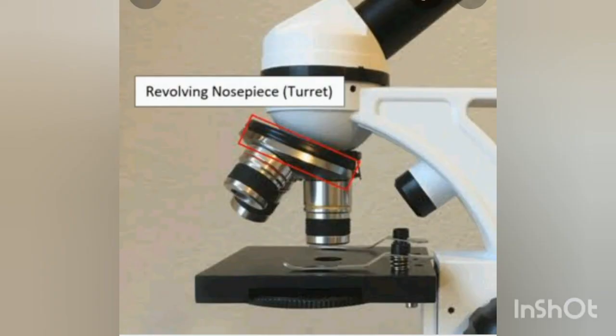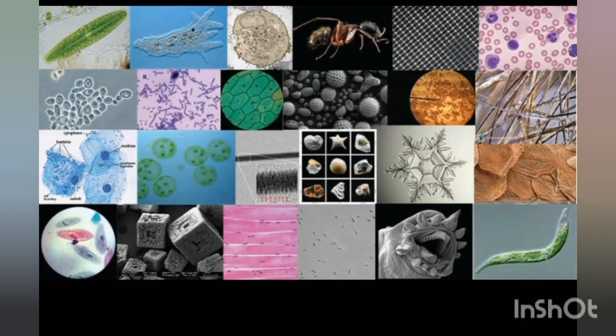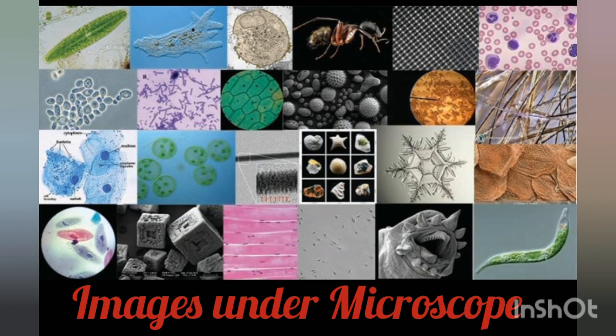In some microscopes, three, four, or five objective lenses can be found. We can select and use the appropriate objective lens to obtain a clear, magnified image.